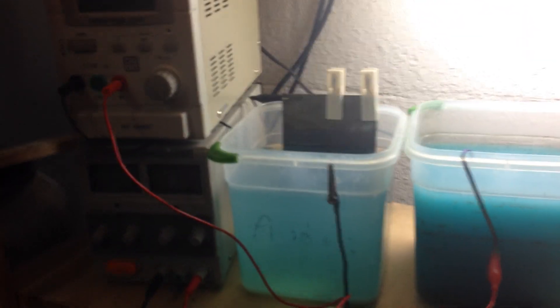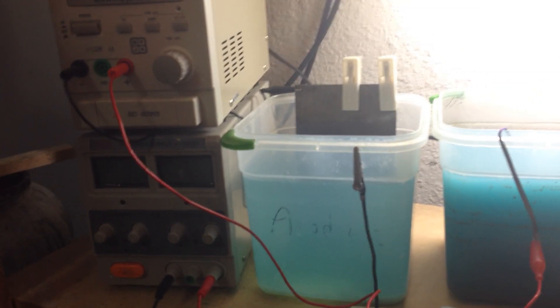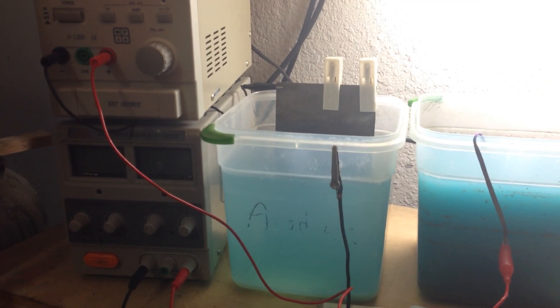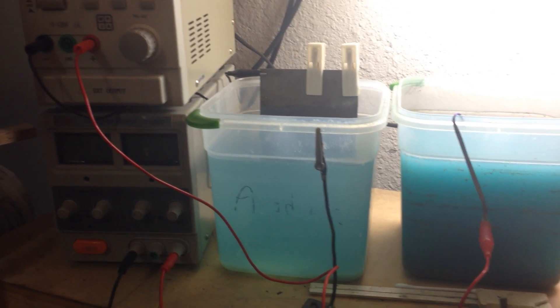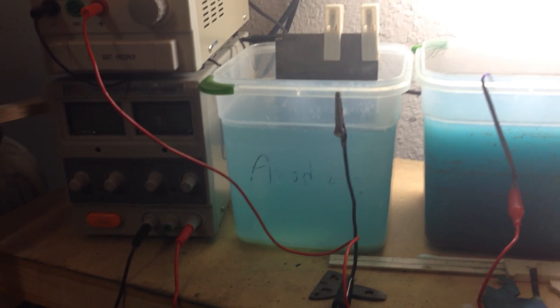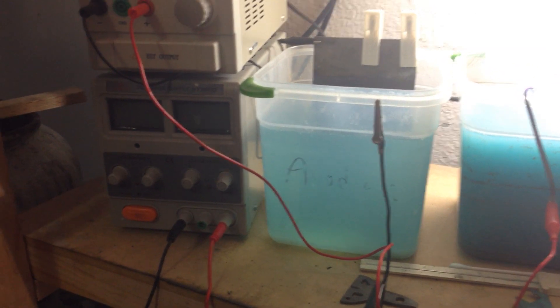You guys know electroanodization of titanium - pretty simple, no big science about it. Electric current goes through a special solution, you put it through the titanium, and it changes color depending on the voltage.